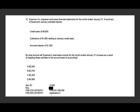Susan's company prepared cash basis financial statements for the month ended January 31st. A summary of Susan's January activities is as follows: credit sales of 5,600, collection of 1,900 relating to January credit sales, and accrued salaries of 1,200. The question is: by what amount will Susan's cash basis income for the month ended January 31st increase as a result of restating these activities to the accrual basis of accounting? Simply put, we're going from cash basis to accrual — how much would our net income be higher?